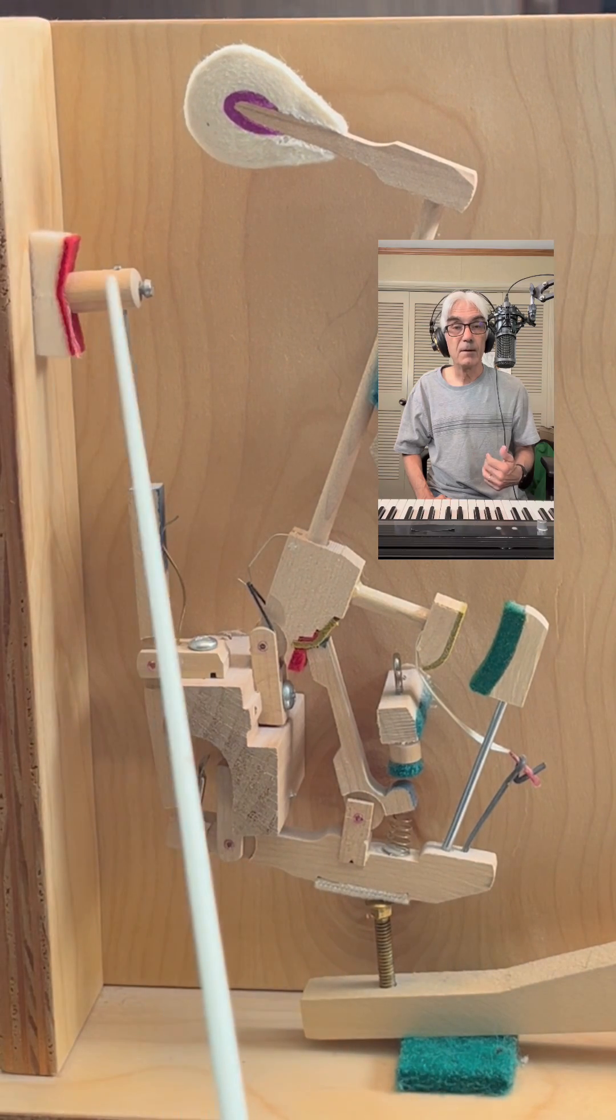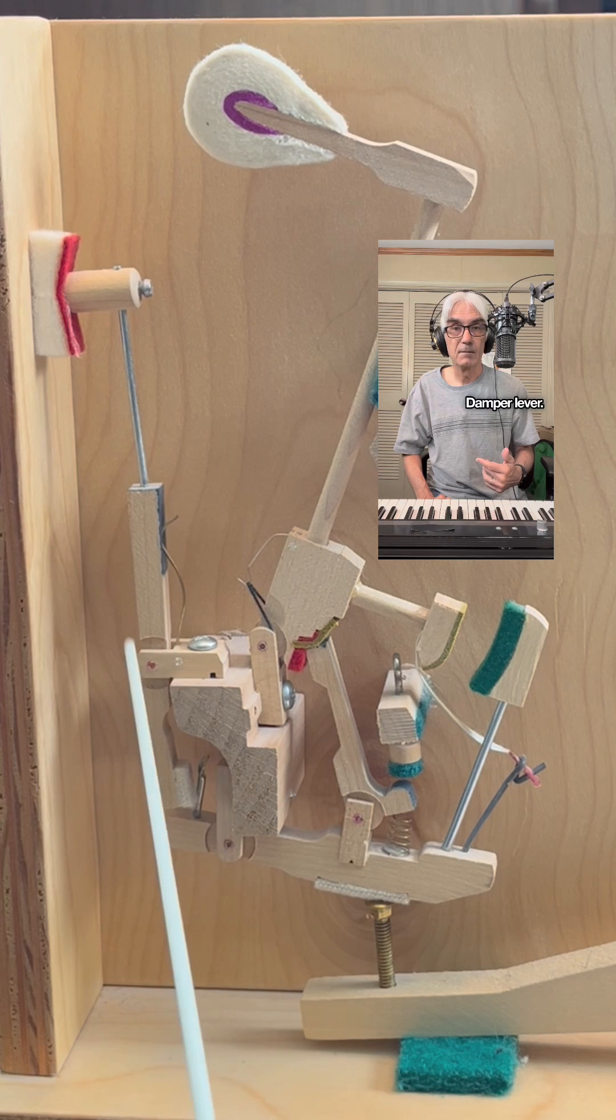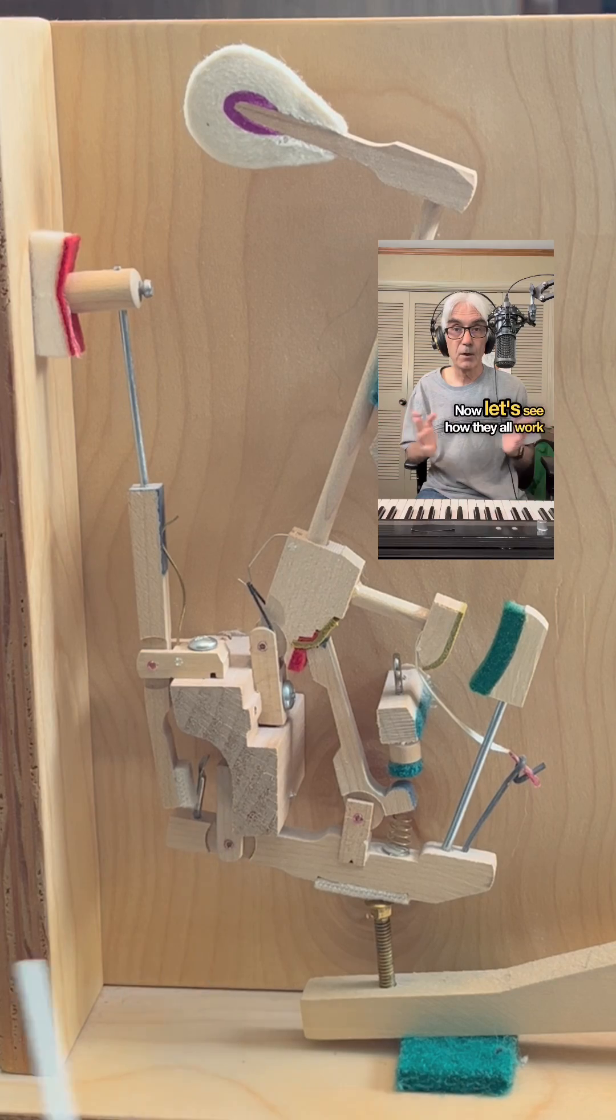Damper felt. Damper head. Damper wire. Damper lever. Damper flange. And damper spoon. Now let's see how they all work together.